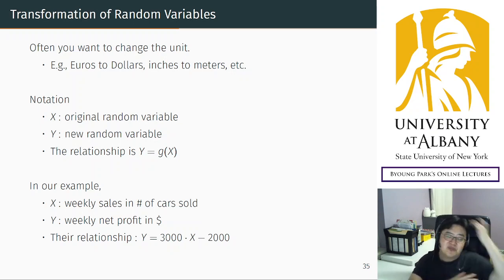Let me use this notation. X is the original random variable. In our example, the original random variable was the number of cars sold by the agent in a week.